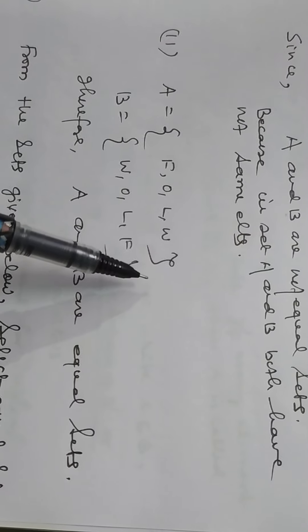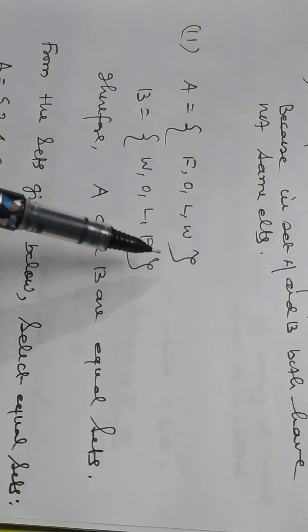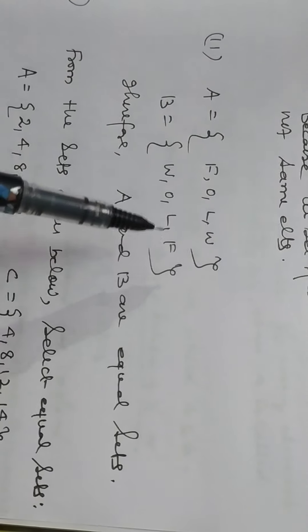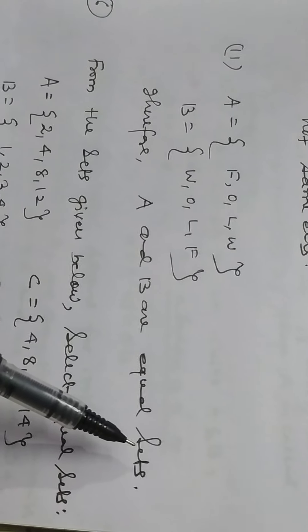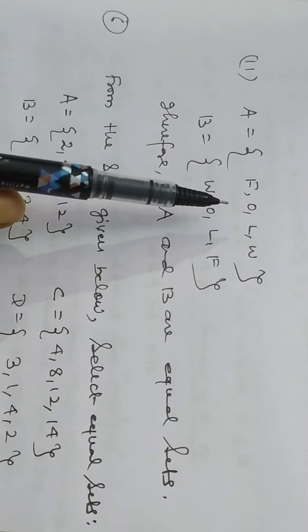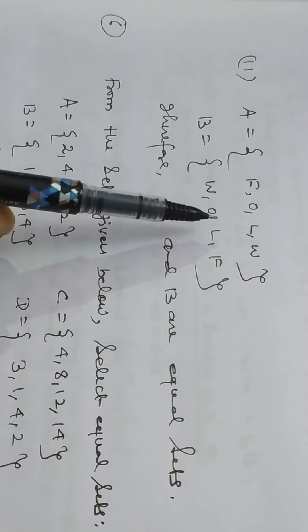Second, F, O, L, W, follow. W, O, L, F, wolf. A and B are equal sets. Therefore A and B are equal sets because both have same elements.